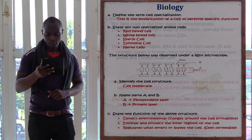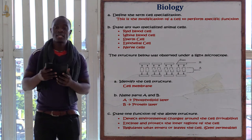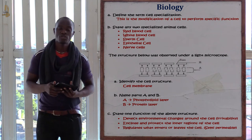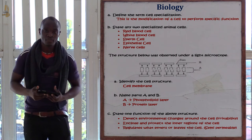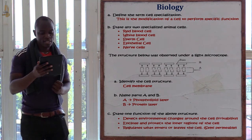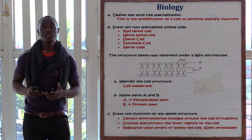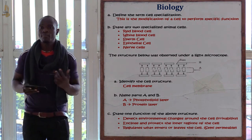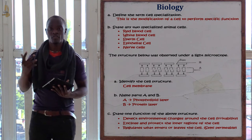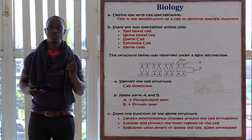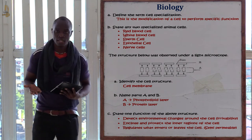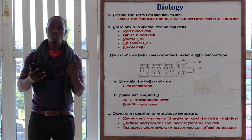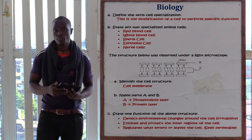The products of the light stage are hydrogen atoms, oxygen gas, and ATP energy. If asked about the products, base your answer only on those three. Cell specialization is the process whereby a cell is modified to perform a specific function. Examples of specialized animal cells include sperm cells, nerve cells, red blood cells, and white blood cells.